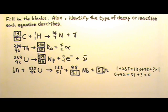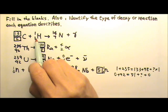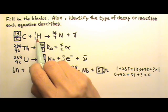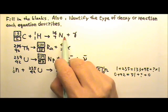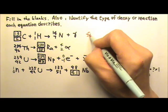Now let's look at the type of decay or nuclear reaction each equation describes. This one, we have two nuclei combining to become a bigger one. So this one is a fusion.